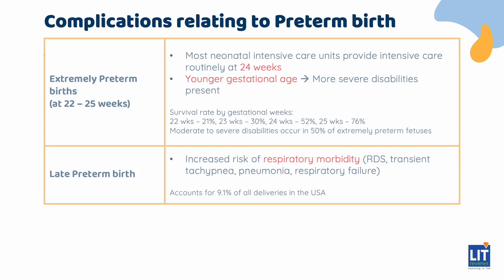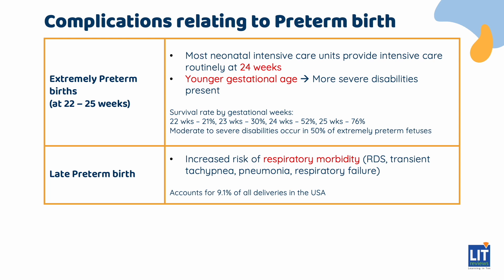Extremely preterm birth is defined as birth between 22 and 25 weeks. Most neonatal intensive care units provide intensive care routinely at 24 weeks. The younger the gestational age, the more severe the disability. However, even late preterm births between 34 to 36 weeks are associated with increased risk of complications, specifically respiratory conditions such as respiratory distress syndrome, pneumonia, and respiratory failure.